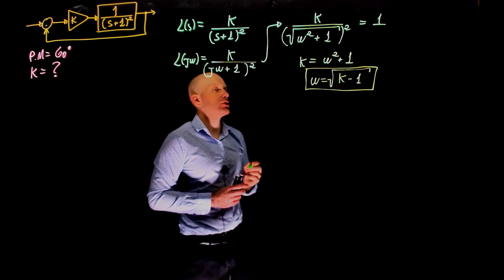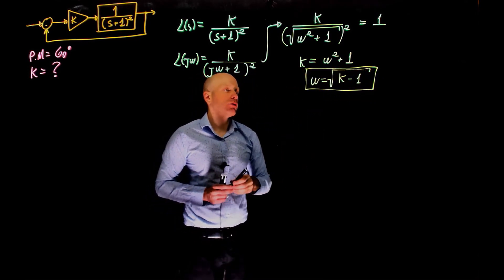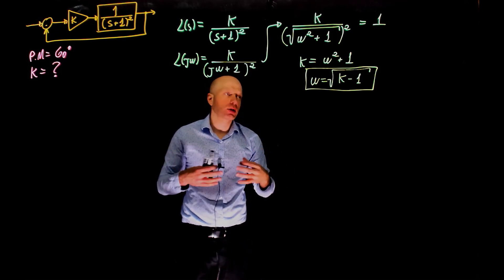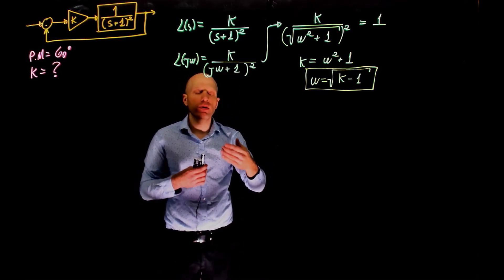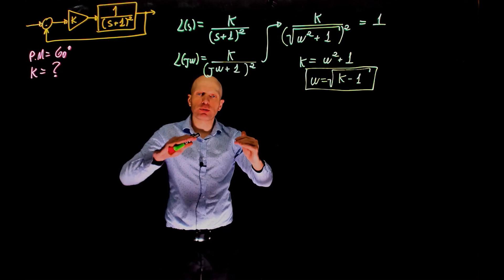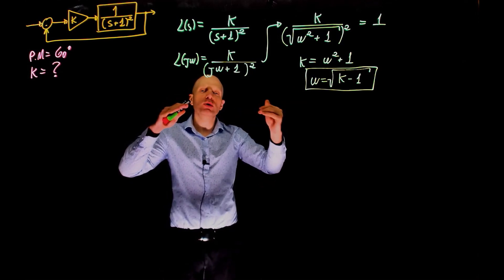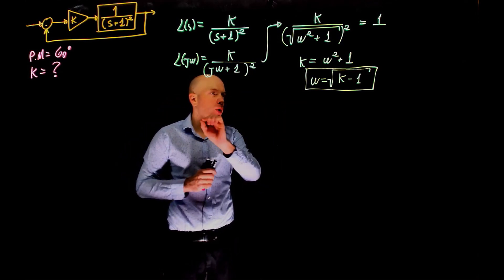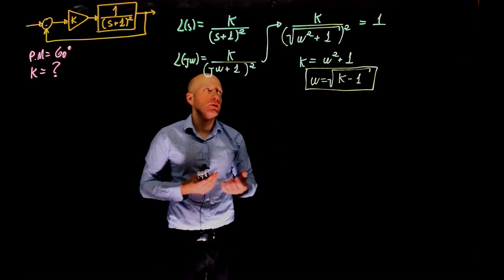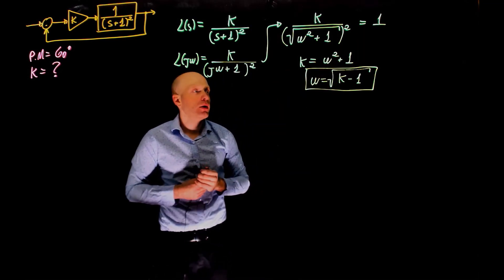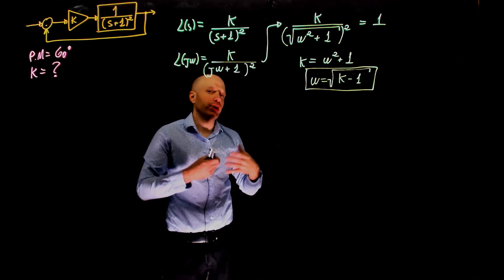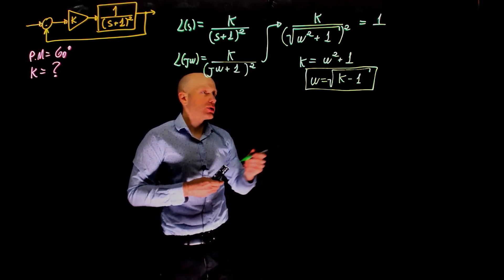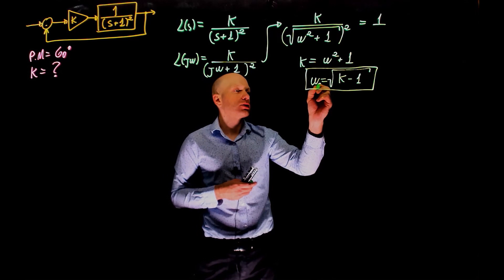So the crossover frequency is a function of k. This is not surprising: if you take a Bode plot and multiply it by a constant value, increasing that value shifts the plot up, and decreasing it shifts the plot down. So the point where the Bode plot crosses 0 dB, or magnitude of 1, is indeed a function of k. This is our crossover frequency — let's call it ωc.